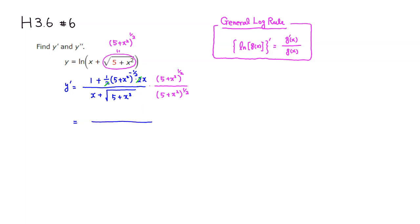Let's work out the numerator first. Applying that factor to the first term gives us the square root of 5 plus x squared. Then distributing to the second term, the (5 plus x squared) to the negative 1/2 and positive 1/2 powers cancel, and the only thing left is x. So the numerator is: square root of (5 plus x squared), plus x.